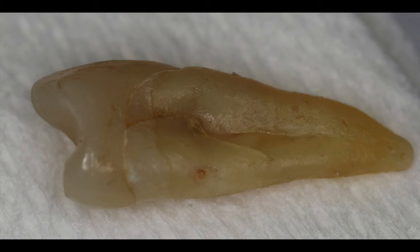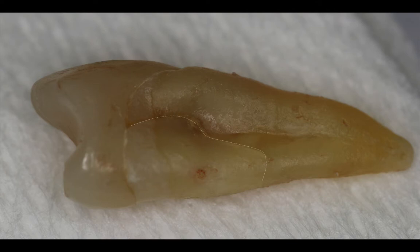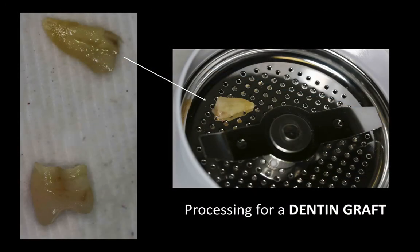When you extract teeth that are cracked, that does not mean that two pieces will come out — sometimes they do. In this case, there's a vertical root fracture that allows bacteria to travel along the crack and cause this infection. So correct diagnosis. Since this tooth has a crown, I'm going to separate the crown from the root, basically just cutting through it, and process the root for a dentin graft.